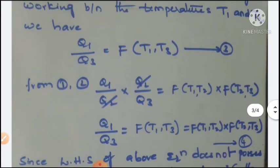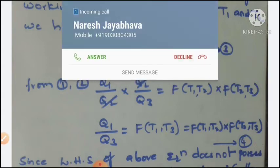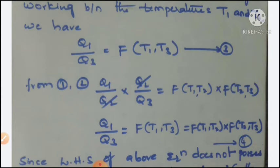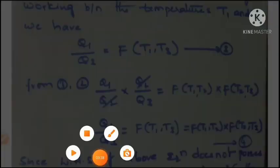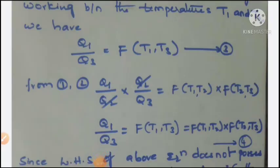Now, let us multiply equations 1 and 2. When we multiply them, Q2 cancels out and we get Q1 by Q3 equal to F(T1, T2) into F(T2, T3). But from equation number 3, Q1 by Q3 is also equal to F(T1, T3). Therefore, F(T1, T3) equals F(T1, T2) into F(T2, T3) — this is equation number 4.